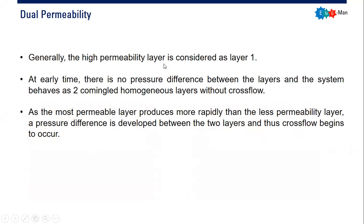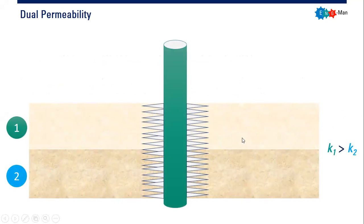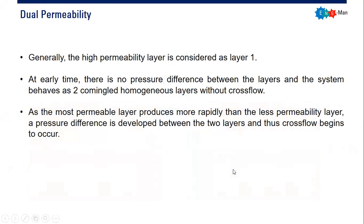Generally, the high permeability layer is considered the first layer. At early time there is no pressure difference between the layers, and the system behaves as two commingled homogeneous layers without cross flow. But as the most permeable layer produces more rapidly than the less permeable layer, a pressure difference develops between the two layers and cross flow begins to occur.